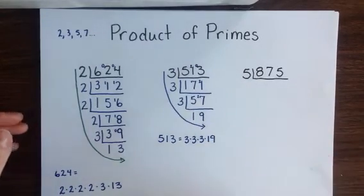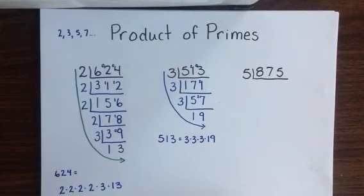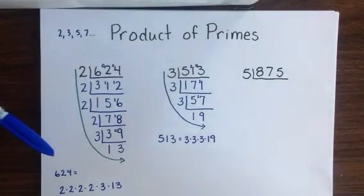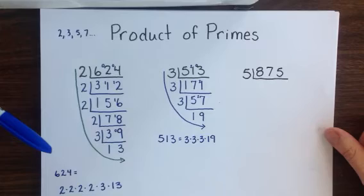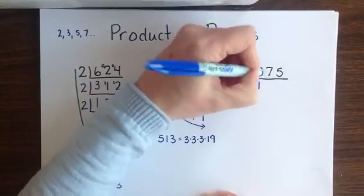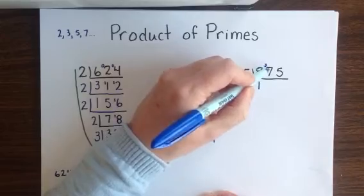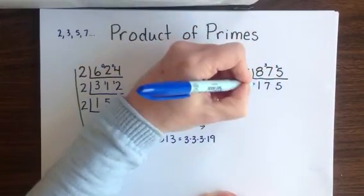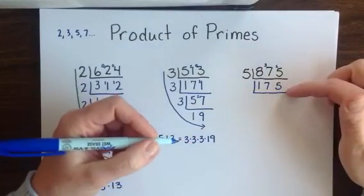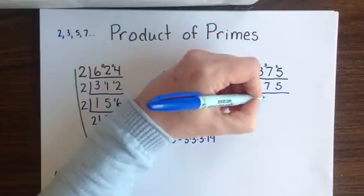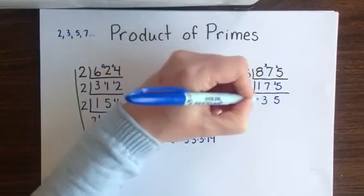One final example gives us the large number 875. I can't divide this number by 2 because it's an odd number. Adding the digits, 8 plus 7 plus 5 gives me a sum of 20, and since 20 is not a multiple of 3, I can't divide by 3 either. That's why I've started with 5. 5 fits into 8 one time with 3 remaining, 5 fits into 37 seven times with 2 remaining, and 5 into 25 fits 5 times. Since my quotient ends in a 5, I know that 5 will once again fit into 175, going into 17 three times with 2 remaining and into 25 five times.